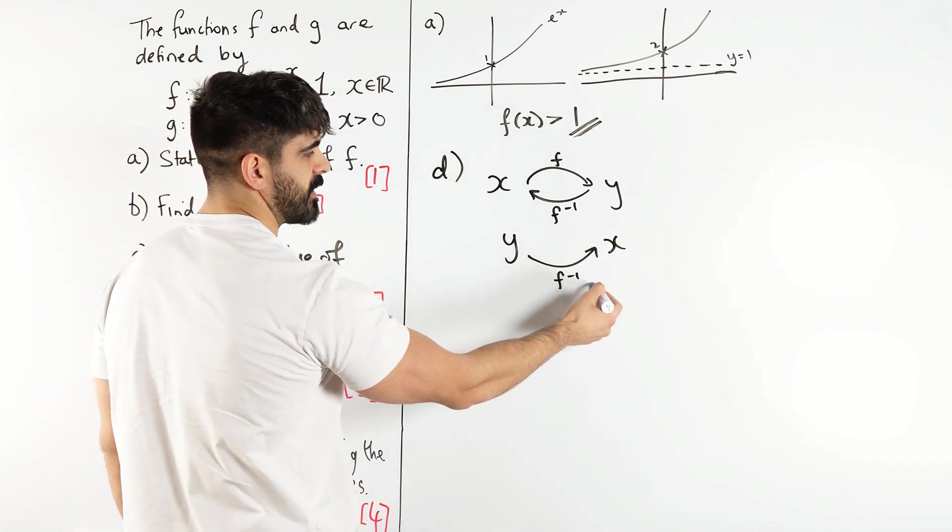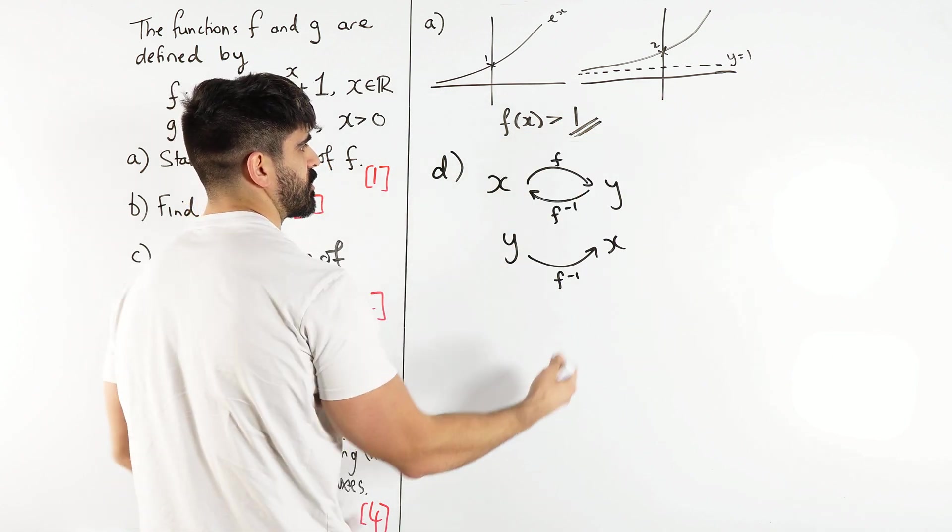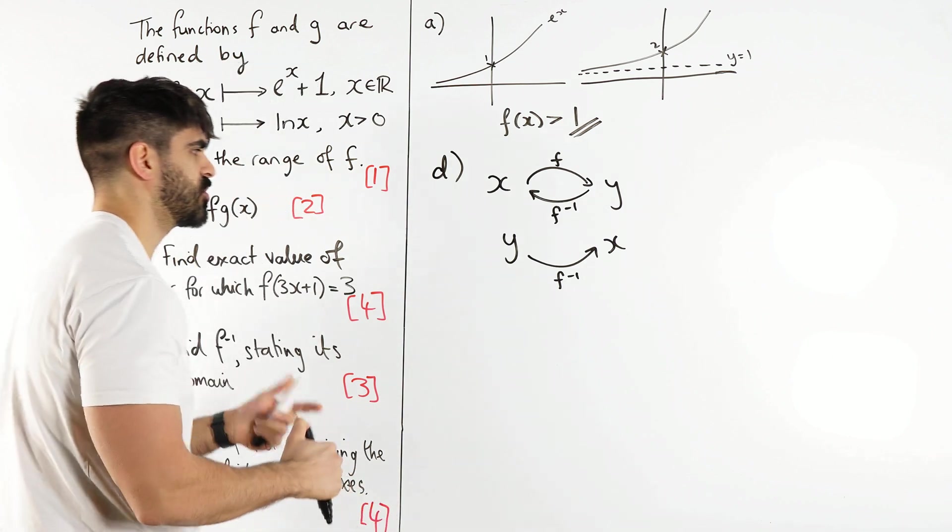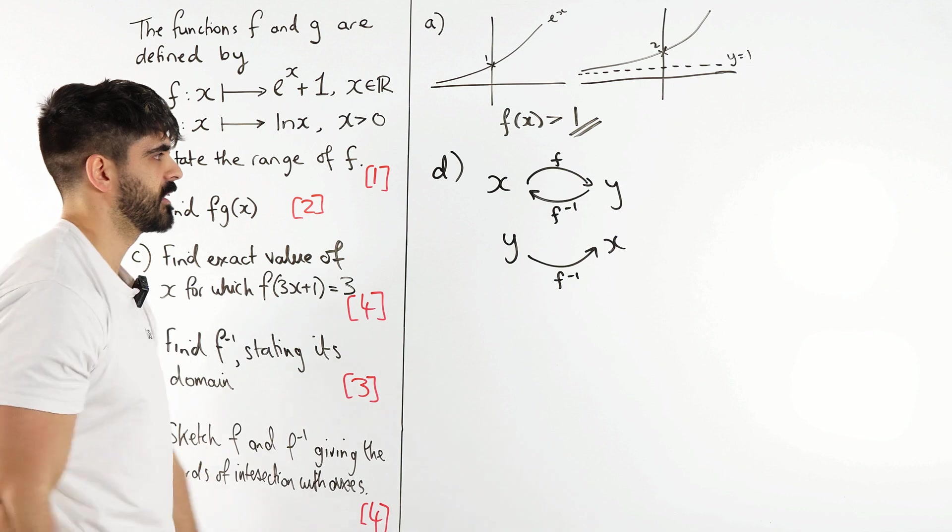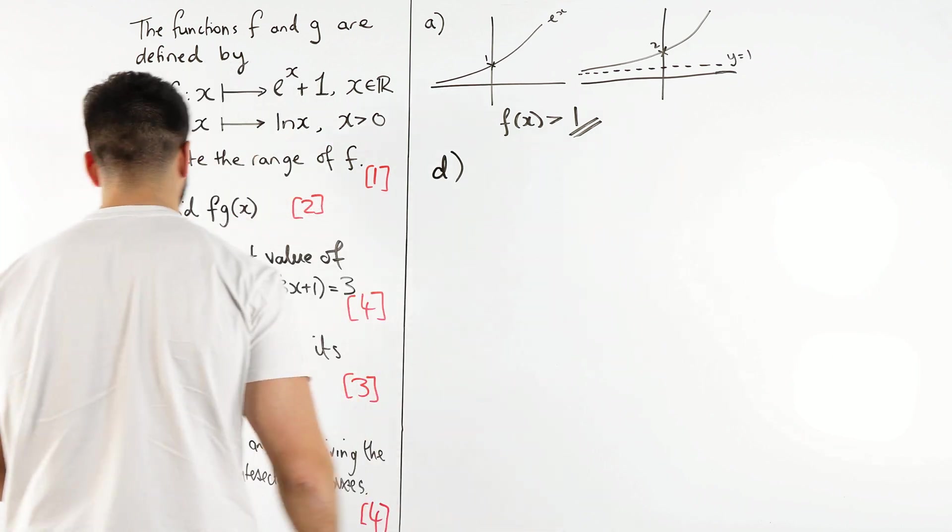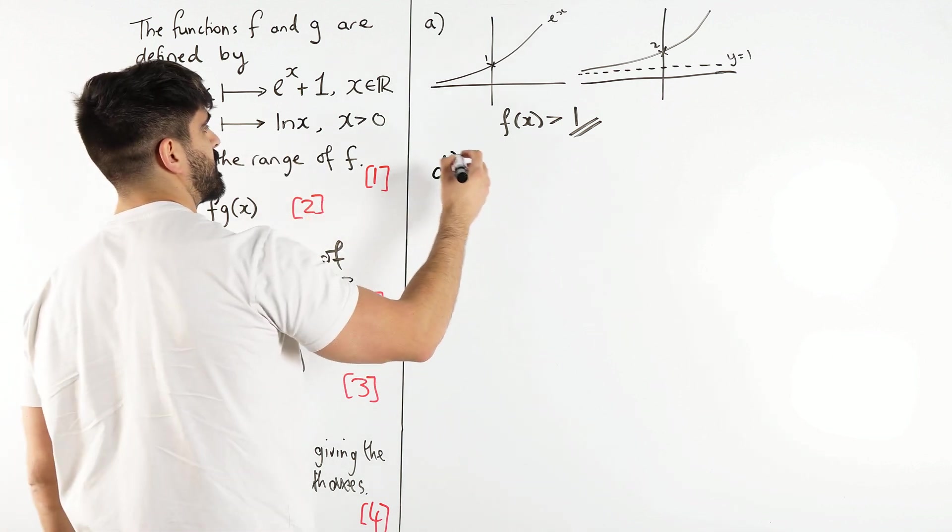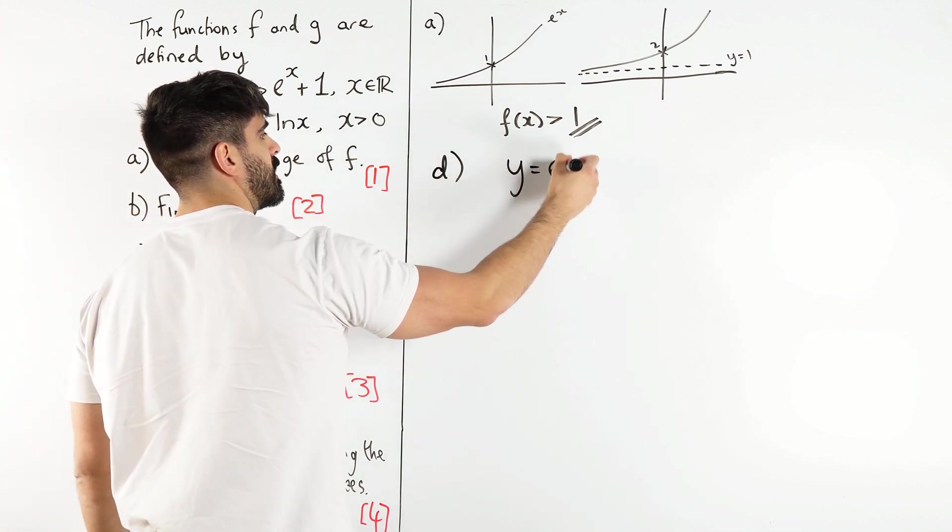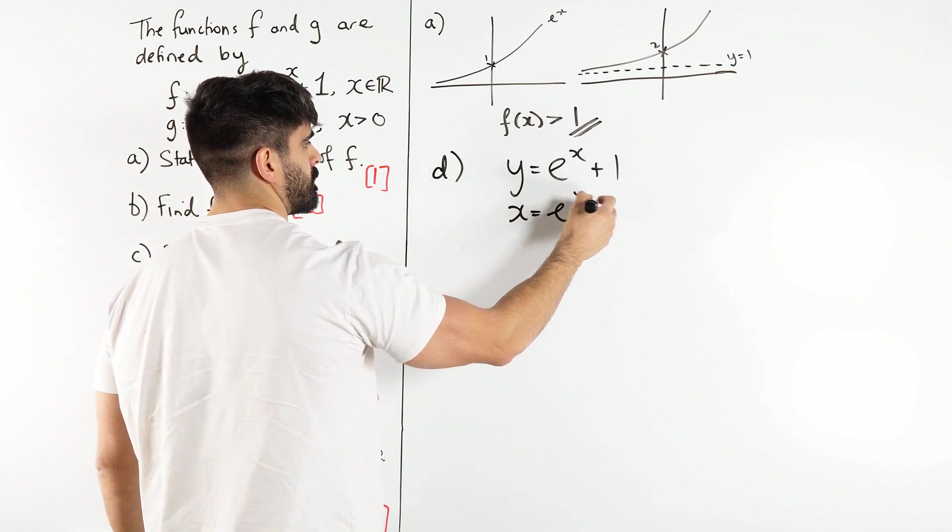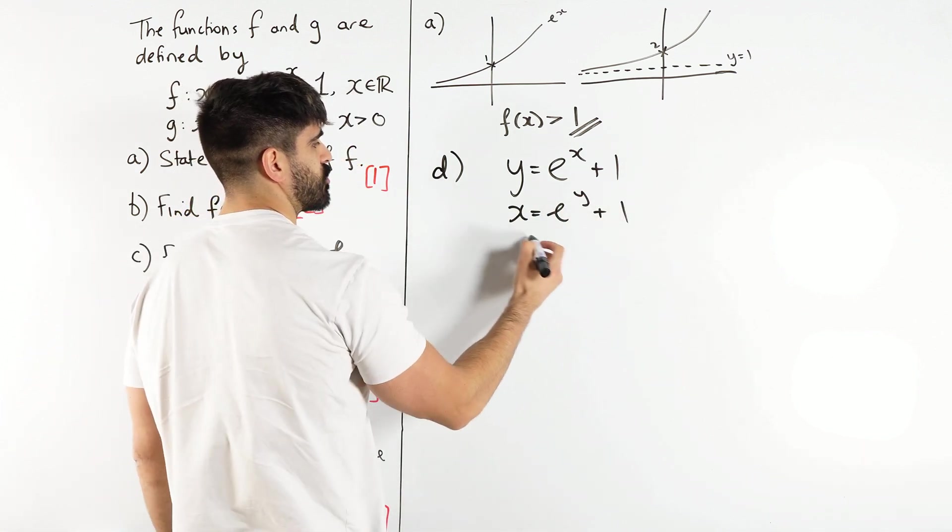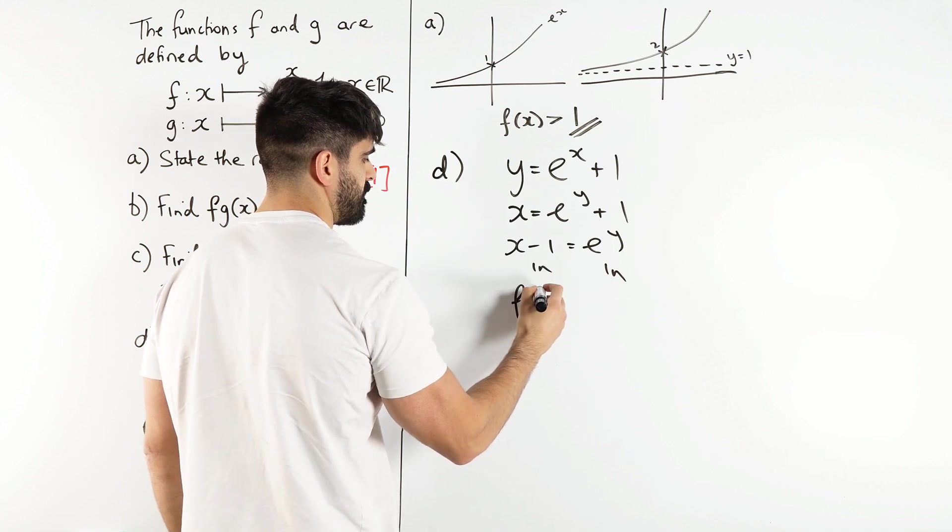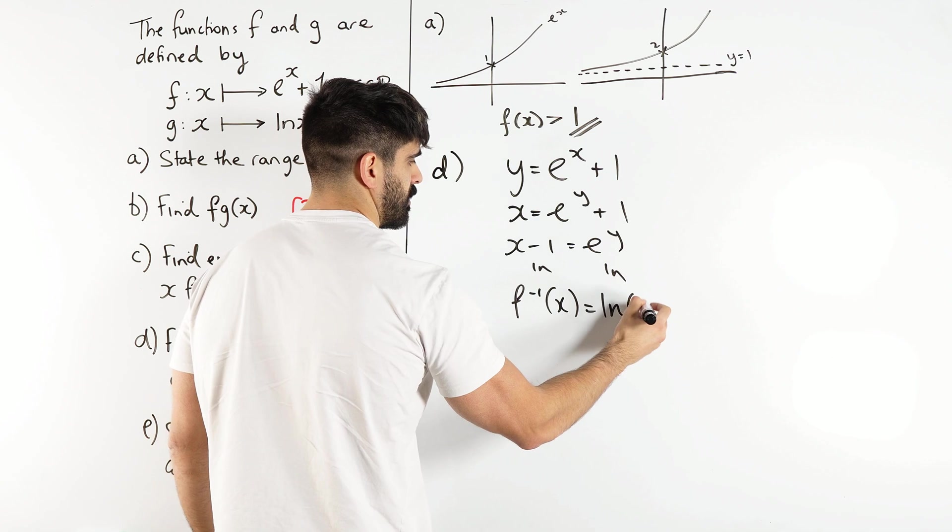So in terms of a function machine, because we want to do f^(-1) of x, we have to swap the x and the y. And that's what we need to do when doing inverse functions—we're switching the y values and the x values. So when we do that in practice, when we have our function f(x) = e^x + 1, we're going to say y = e^x + 1. Then we're going to switch the x and the y. And then we just rearrange for y. So we subtract 1, then ln both sides. So we have y, which is f^(-1), is ln(x - 1).